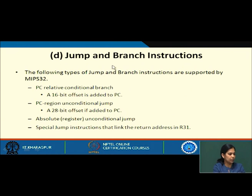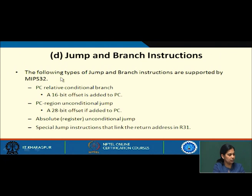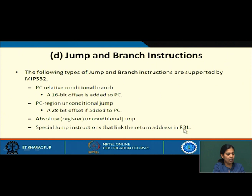The next set is jump and branch instructions. Whenever we want to perform branching — for example loops in a program — we require jump and branch instructions. PC-relative conditional branches add a 16-bit offset to the PC; unconditional branches add a 28-bit offset to the PC. Absolute unconditional branches provide the absolute address in a register. Special jump functions link the return address in register R31.